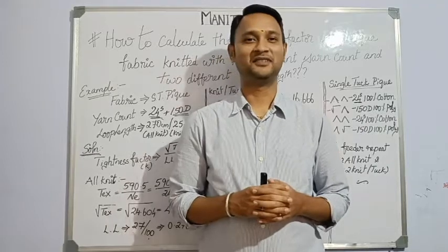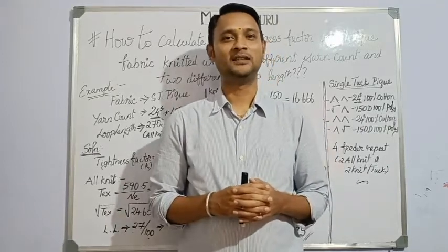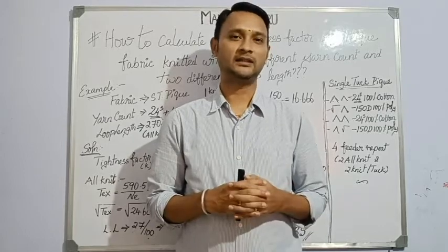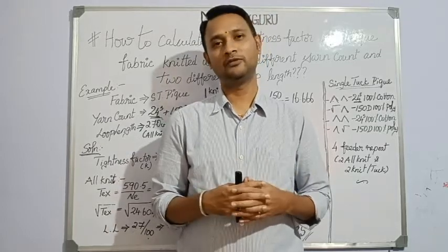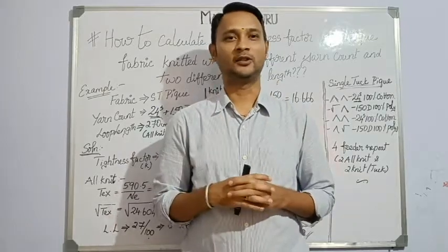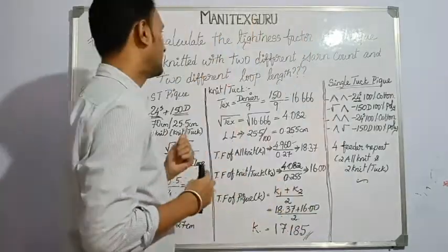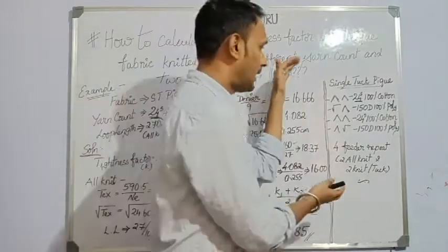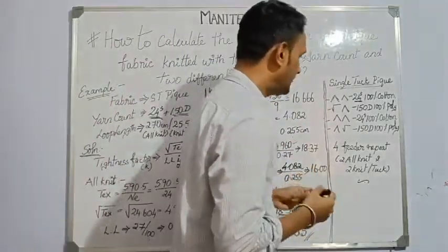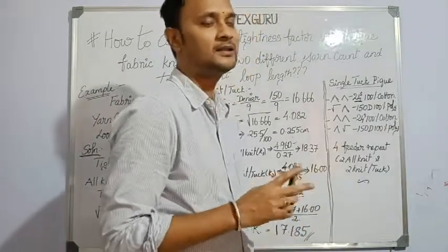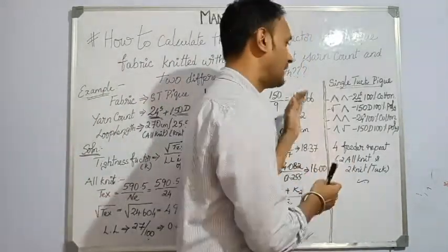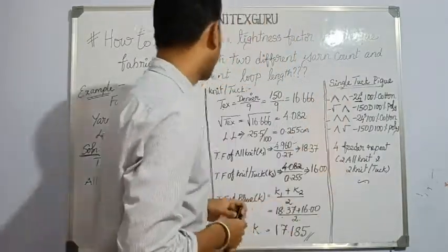Hi, hello everyone, welcome to Money Tex Guru. In this video we are going to learn how to calculate the tightness factor for a single tuck PQ fabric knitted with two different loop lengths and two different yarn counts. Before starting our calculation, let's understand how the single tuck PQ fabric structure works — it is a four-feeder repeat and is a combination of two all-knit and two knit-tuck structures, equally distributed.